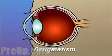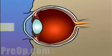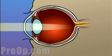Astigmatism occurs when the cornea is unevenly curved, causing light rays to fall off-center or not to focus properly at all.